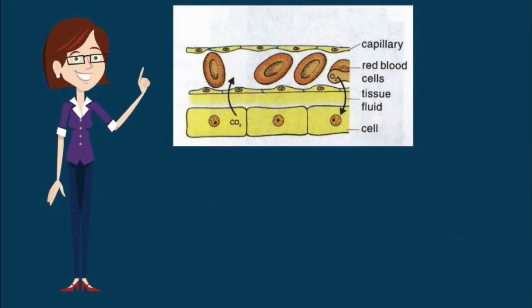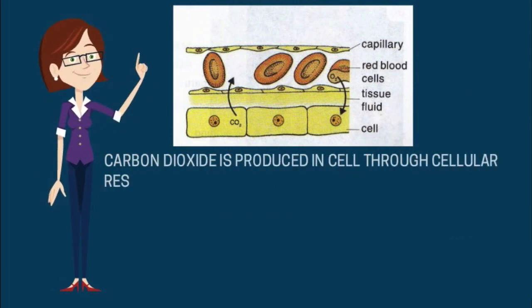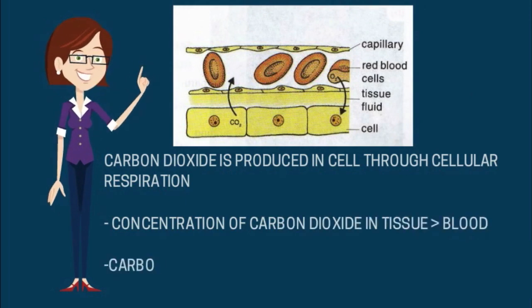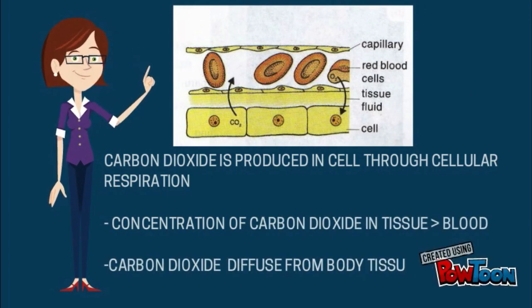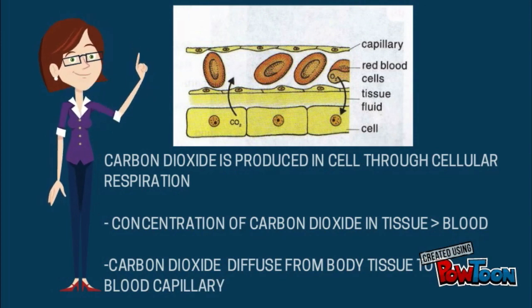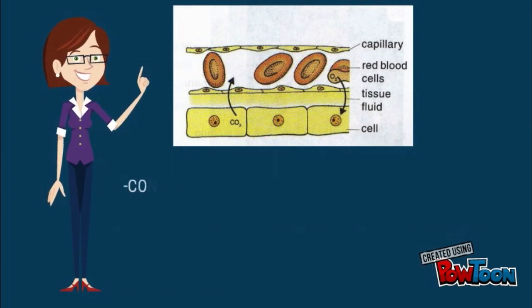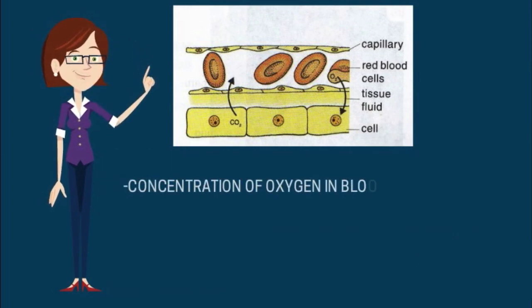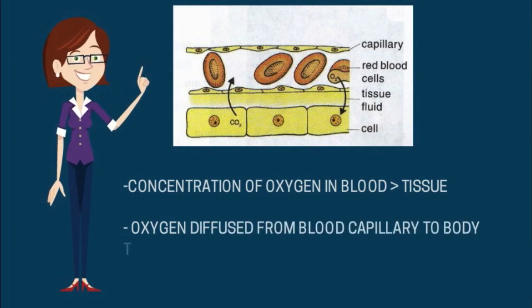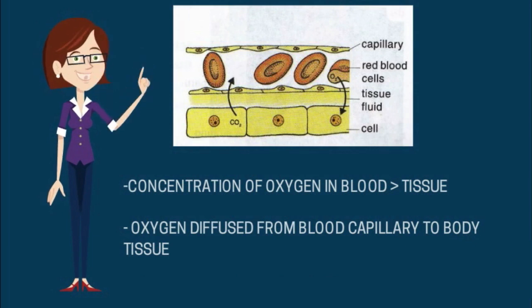In our body, carbon dioxide is produced in cells through cellular respiration. So the concentration of carbon dioxide is high in the cell and low in the blood capillaries, which causes carbon dioxide to diffuse from the cell to the blood capillaries following the concentration gradient. The concentration of oxygen is low in the cell and high in the blood capillaries, which causes oxygen to diffuse from the blood capillaries to the cell following the concentration gradient.